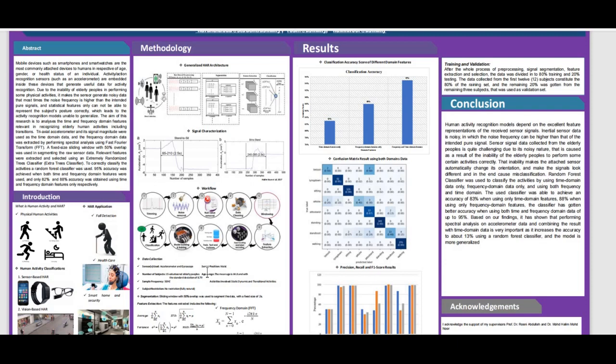The sensors used for the purpose of this research are accelerometer and gyroscope, with the sensor position attached to the waist position. After performing experimentation we found that is the best. A number of subjects, 15 individuals volunteered to perform these activities with an age range of 64.8 and standard deviation of 8.79. The sampling frequency we use is 50 hertz. The subjects were not restricted in performing any physical activity.